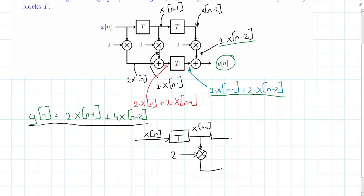And we also delay the signal once more. So another delay, another multiply. This leads to x[n-2]. And we multiply that with a factor of 4.